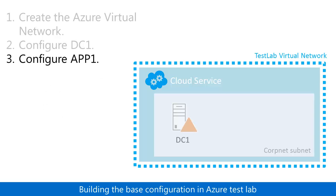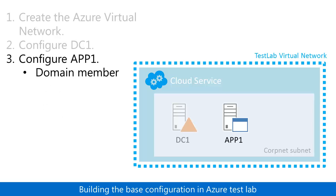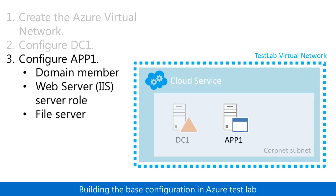In step three, you create a new virtual machine named App1. You join it to the domain, then install the web server IIS server role, and configure it as a file server.